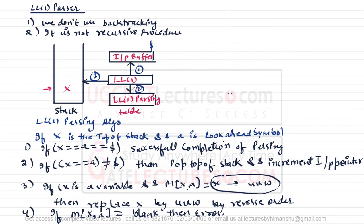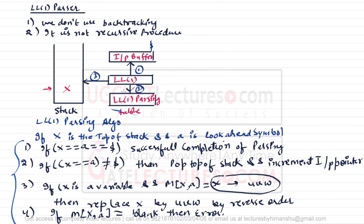Write down all these points in your notebook. To explain this algorithm step by step, we first need to know how to create the LL1 parsing table. If we can create the LL1 parsing table, only then will we be able to do LL1 parsing. So let us take an example grammar and see how to create an LL1 parsing table from it.